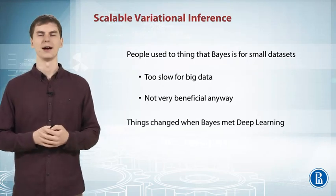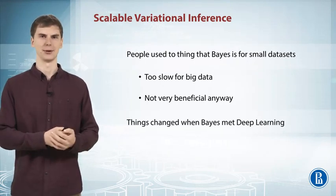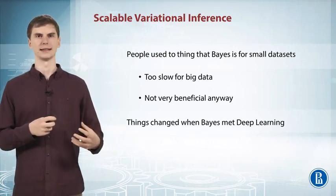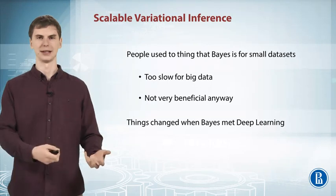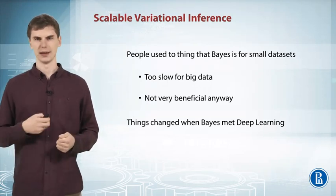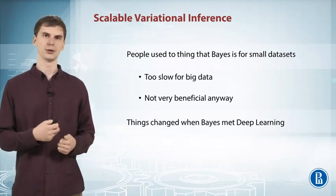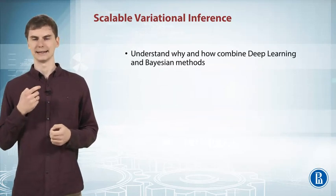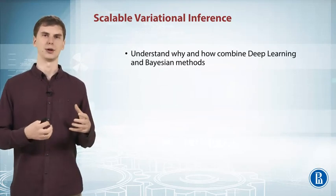But things changed and Bayesian methods met deep learning and people started to make some mixture models that has neural networks inside of a probabilistic model. And this is what this week will be about. How to combine neural networks with Bayesian methods.